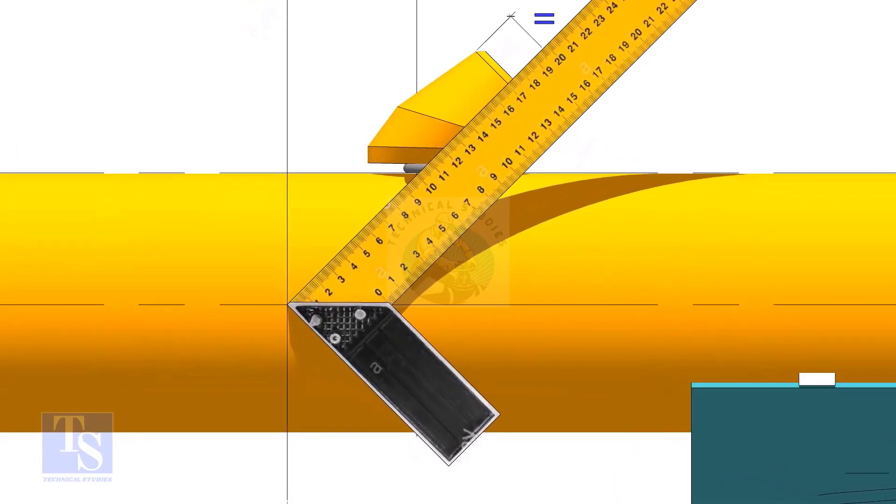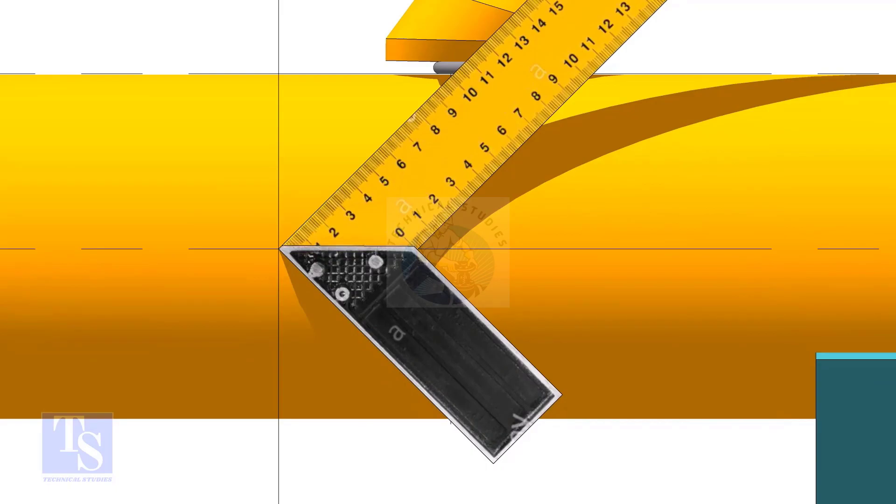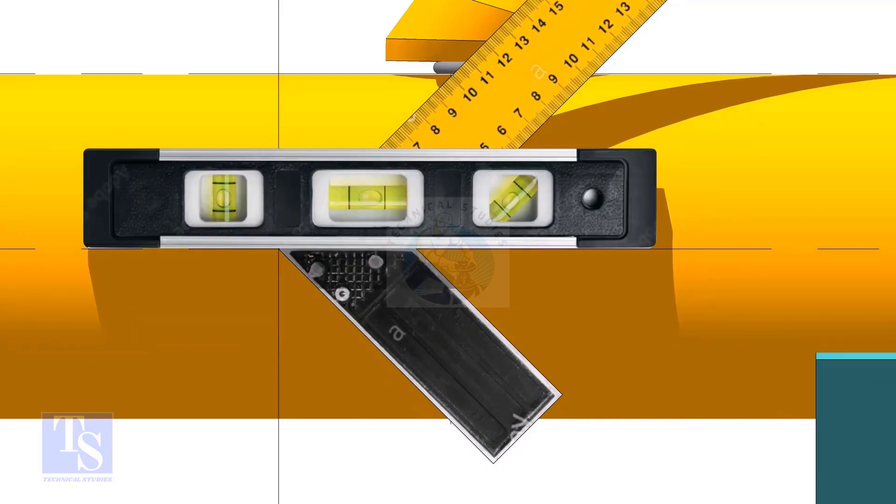Hold a right angle on the center line as shown. Put a level bottle on the right angle and maintain the level. Rotate the right angle as required.